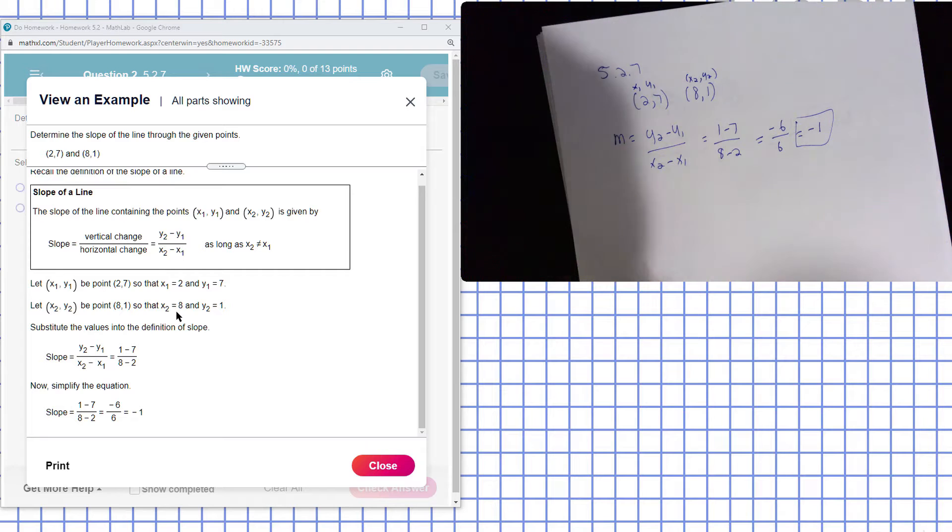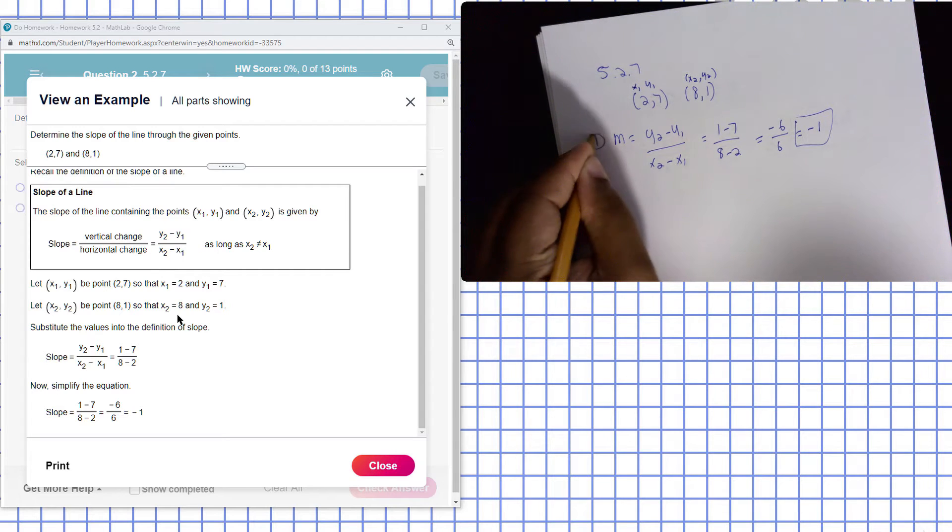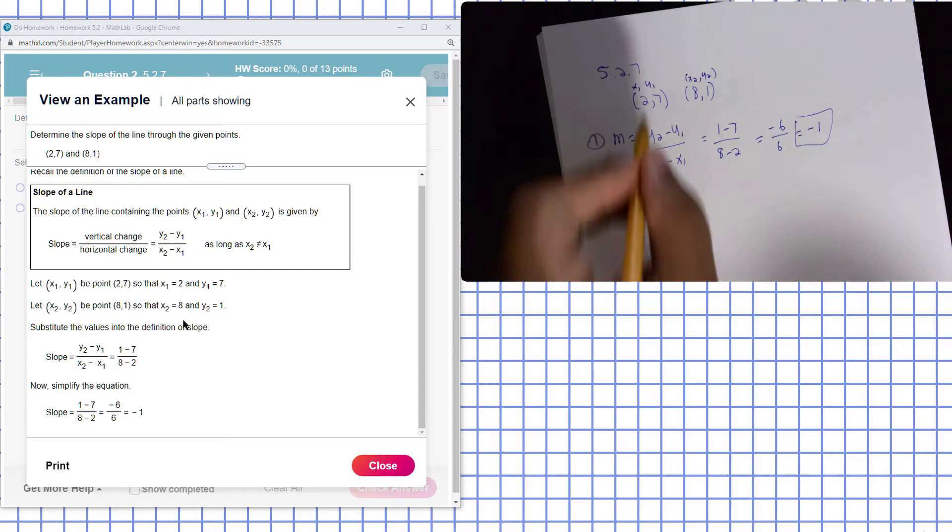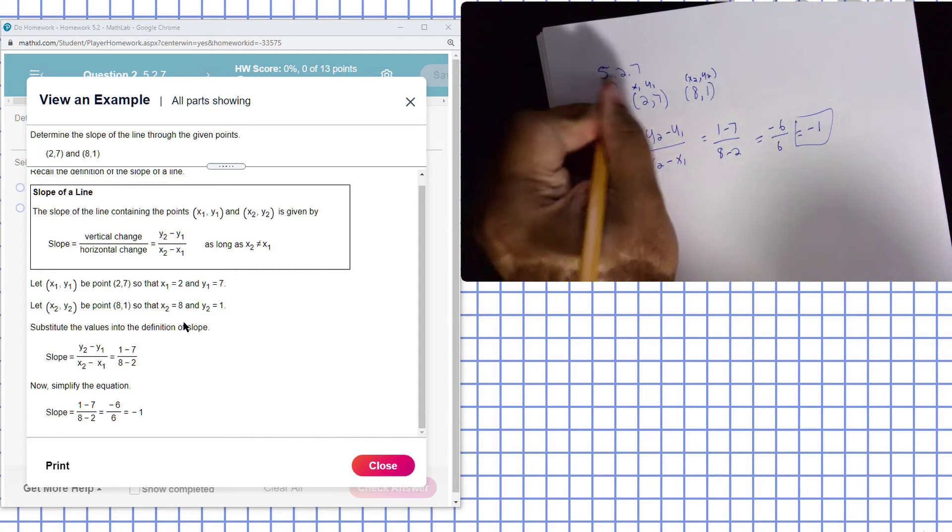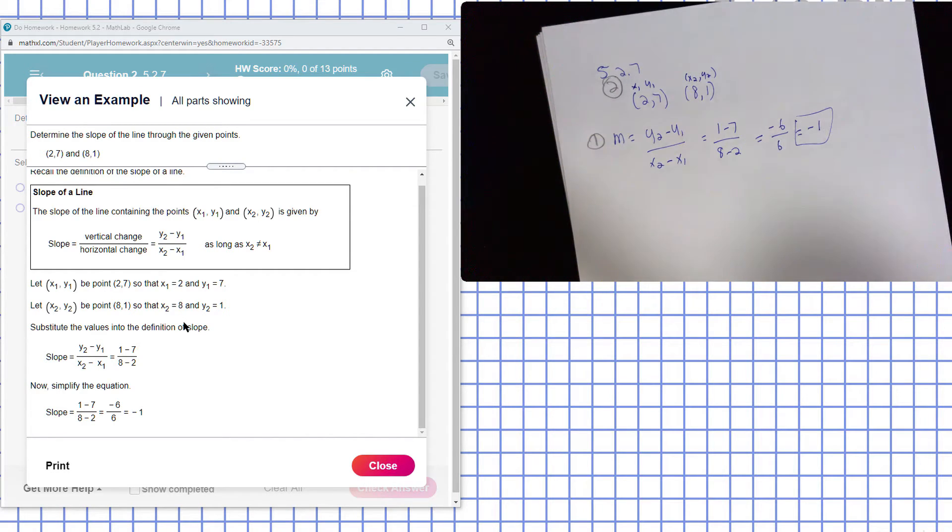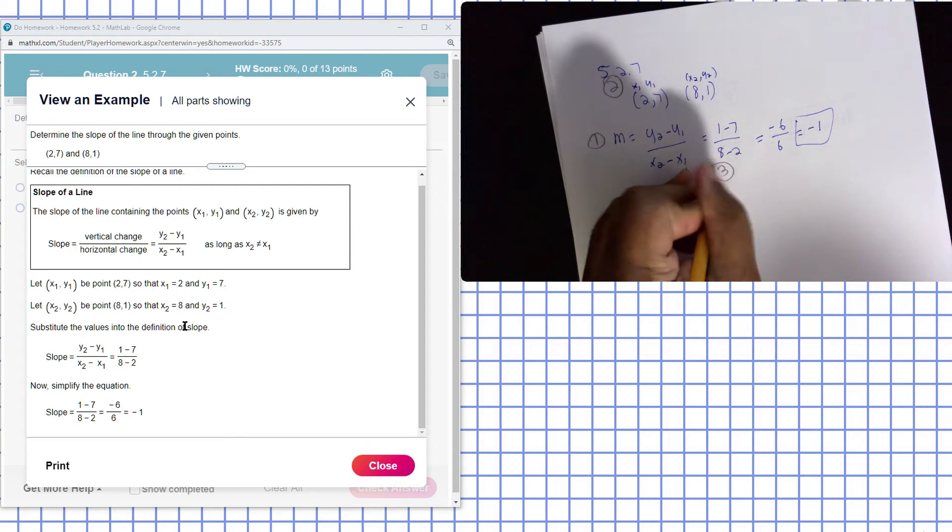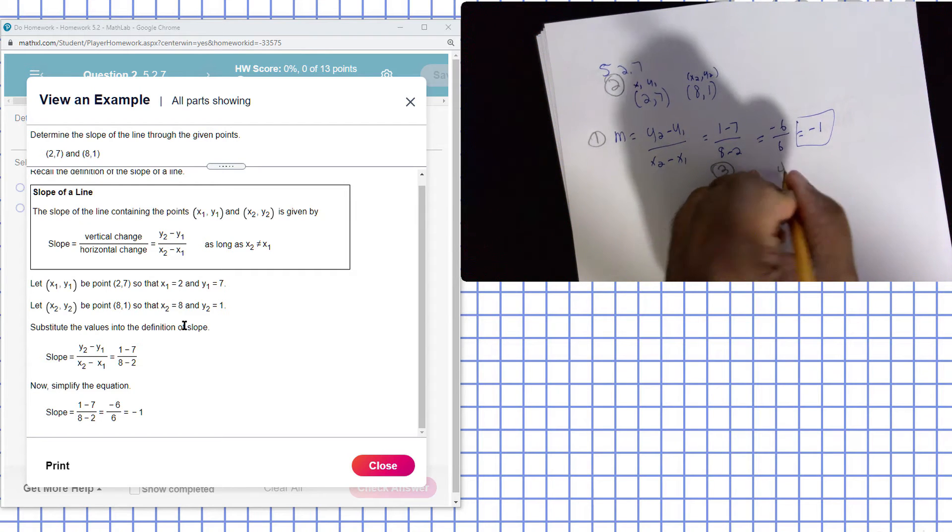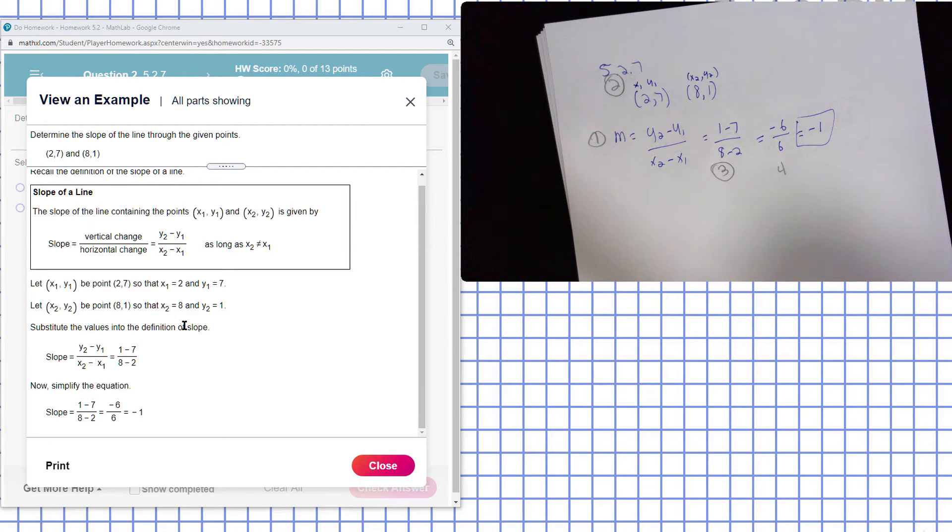So the first thing you do is write out your formula you're going to be using. The second thing you do, you assign values to the variables in the formula. The third thing you do is you plug in. The fourth thing is simplify. Set up the problem first completely, then do your computation.